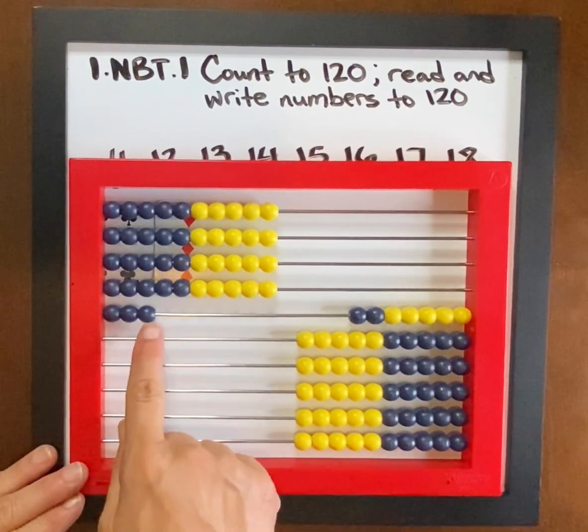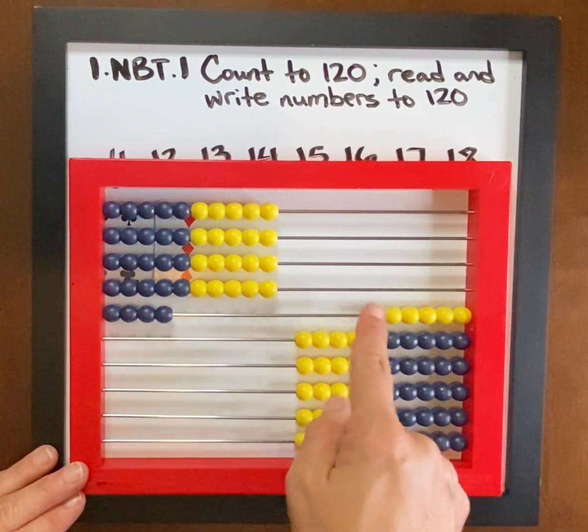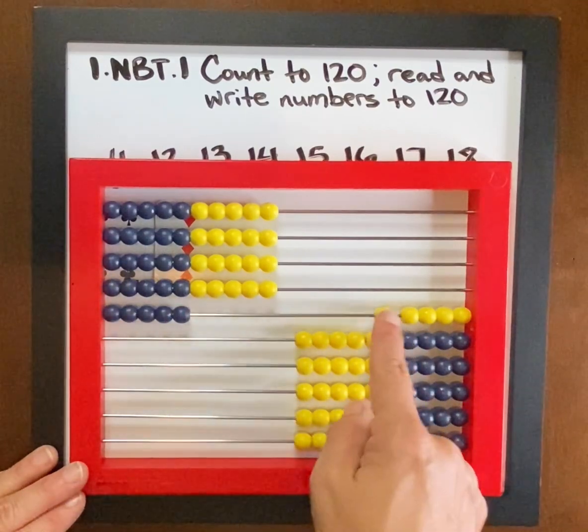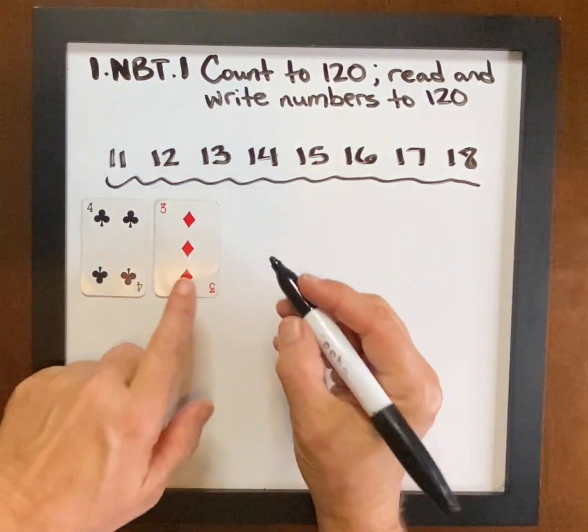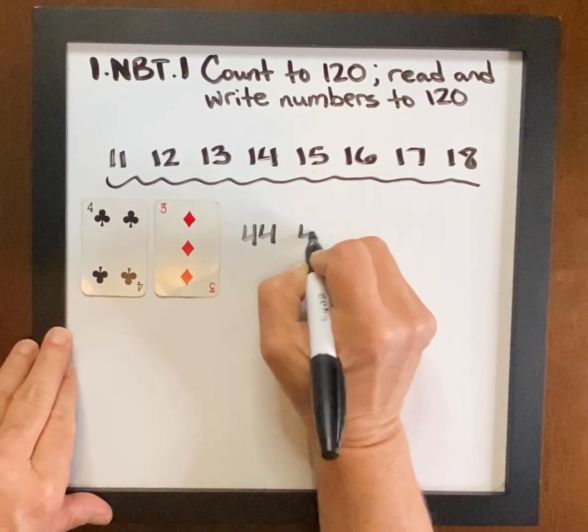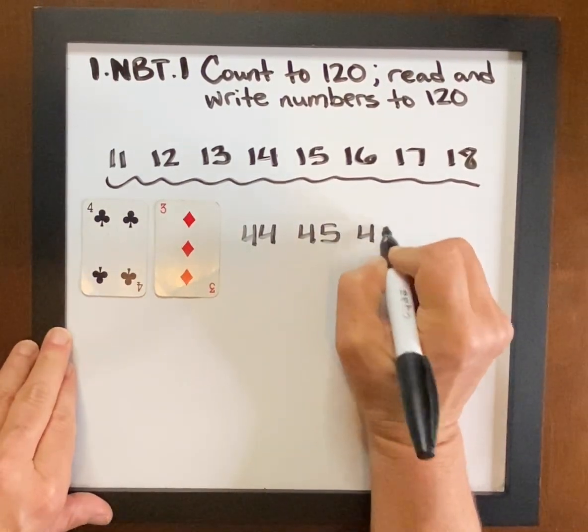Let's keep counting. 4, 10, 3. Count on. 4, 10, 4. 4, 10, 5. 4, 10, 6. You can do it here now. 4, 10, 3. 4, 10, 4. 4, 10, 5. 4, 10, 6.